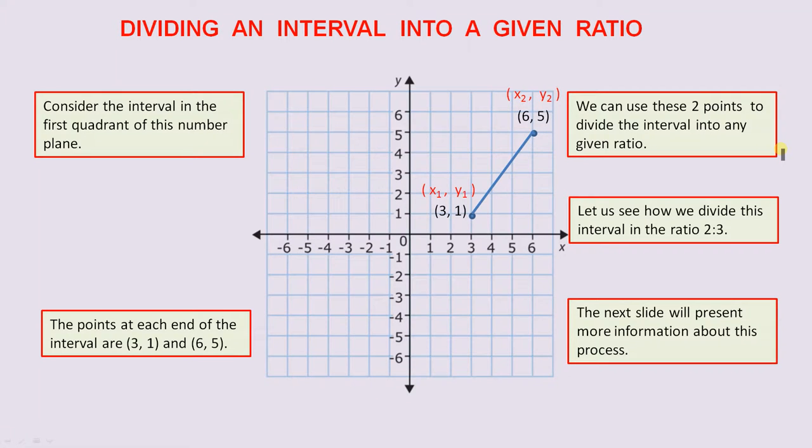Dividing an interval into a given ratio. Consider the interval in the first quadrant of this number plane. There it is there. The points at each end of the interval are (3,1) and (6,5).